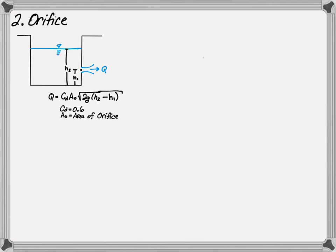By applying the total energy equation, one can determine the flow rate going through the orifice. The flow rate is equal to the coefficient of discharge times the area of the orifice times the square root of 2 times gravity times the difference in height.